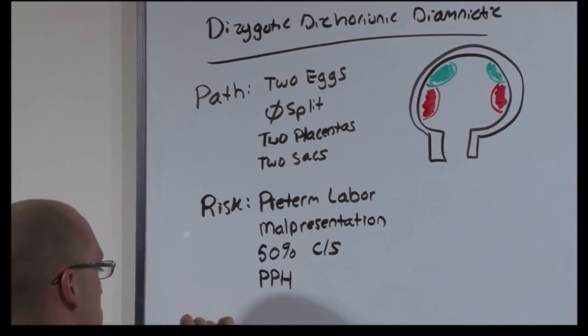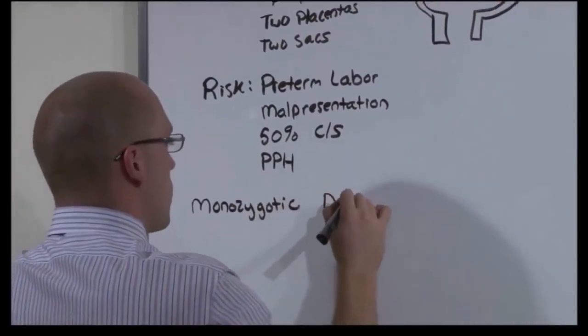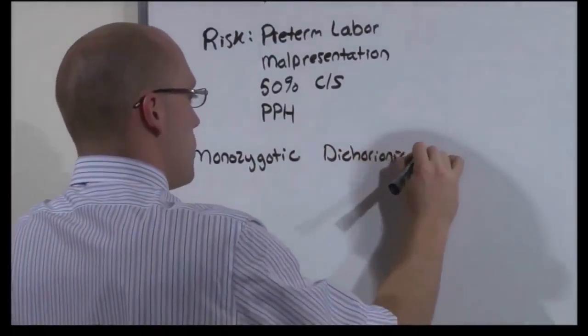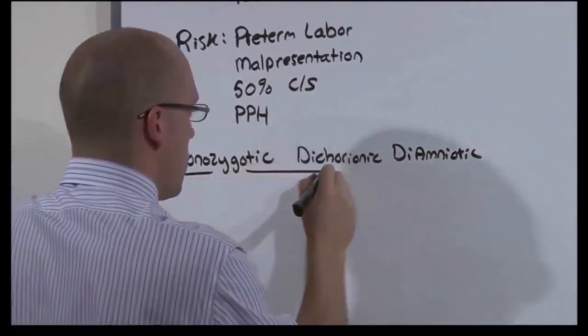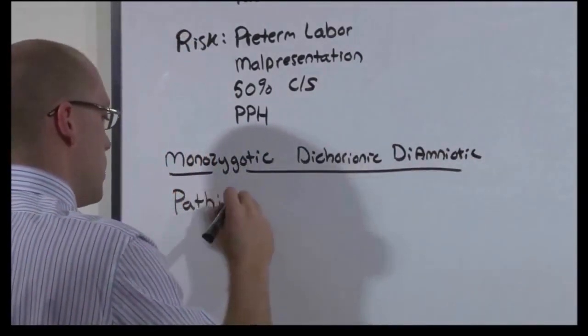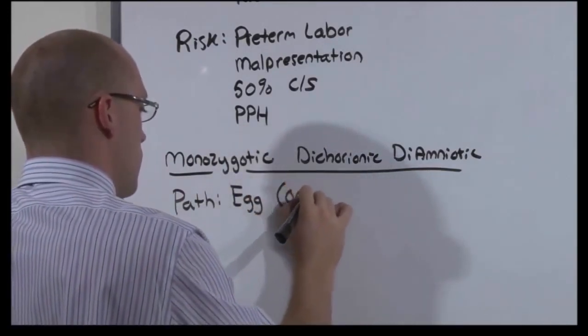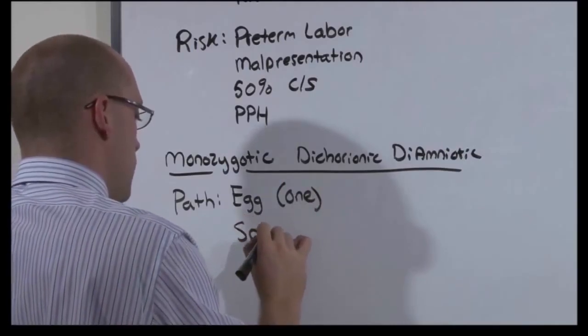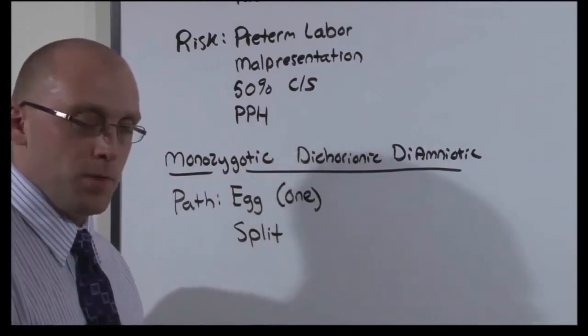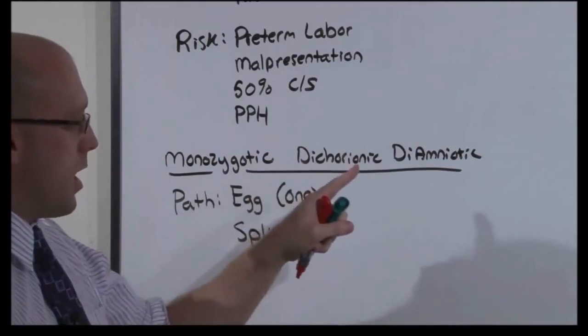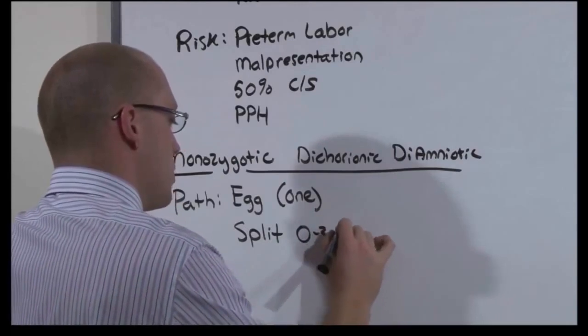The next type of twin is the monozygotic, dichorionic, diamniotic twin. The only difference here is that the fertilization is of one egg and that there was a split. And the more separate the twins are, the earlier the split. To get a monozygotic, dichorionic, diamniotic twin, the split had to occur zero to three days after fertilization in the tubal phase.